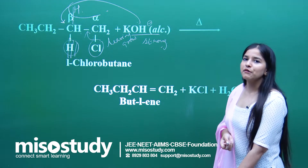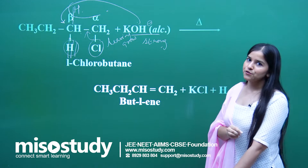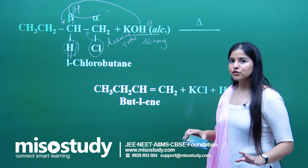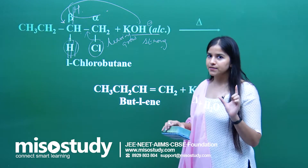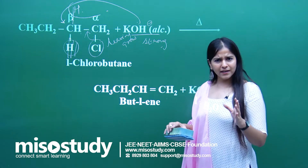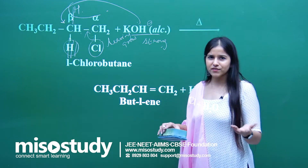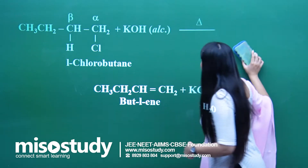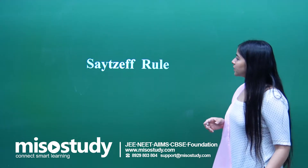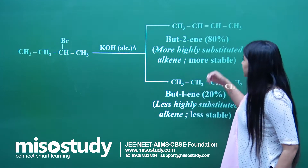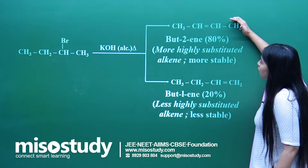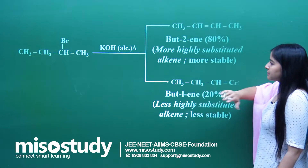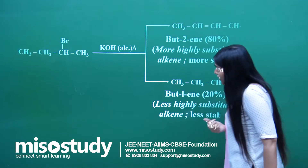Always remember, SN2 is favored. Now this was a very simple example. Coming on to the application of the Zaitsev rule — what does it say? It is similar to Markovnikov's and anti-Markovnikov's rules. The Zaitsev rule states that there is a greater possibility of formation of the highly substituted product compared to the less substituted product.